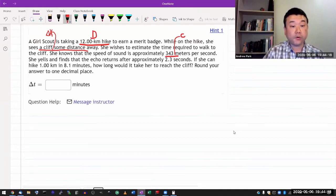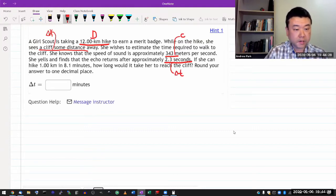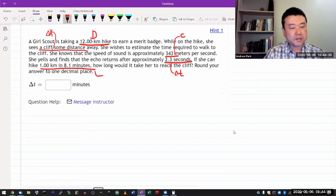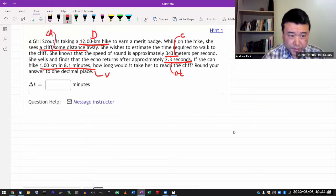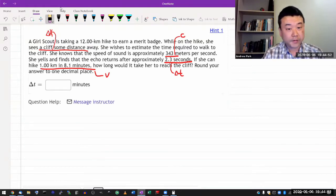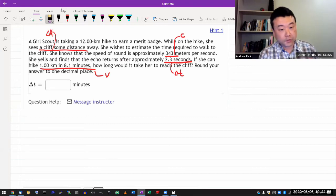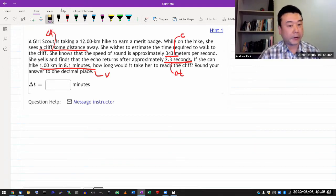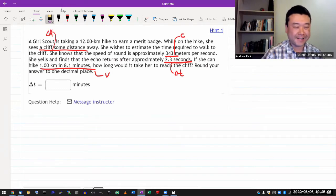She yells and finds that echo returns after approximately 2.3 seconds. Let me call that delta T. If she can hike 1 kilometer in 8.1 minutes, let me just tie this to speed V. How long would it take her to reach the cliff? So I guess having read through this, it looks like this information here was a distractor. This 12 kilometers, you don't use it anywhere. That's the total hiking distance, but they're not asking for that. So I don't use that 12 kilometers at all. That's part of the critical reading that you should do.